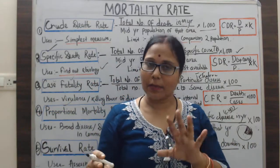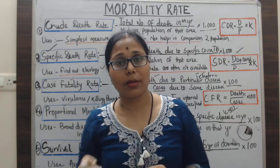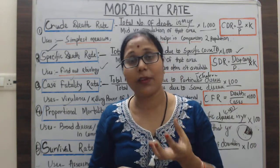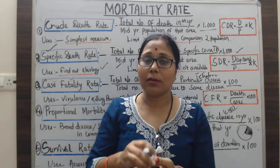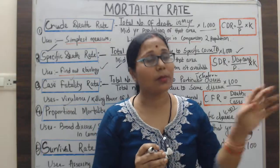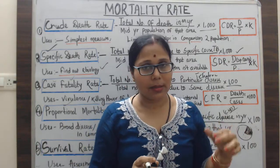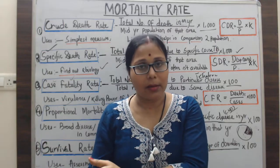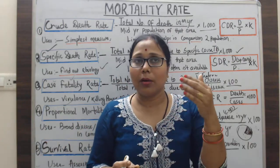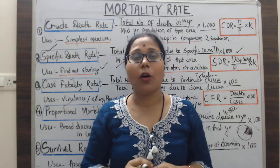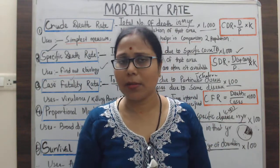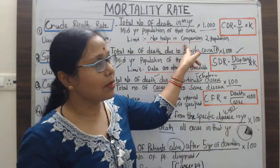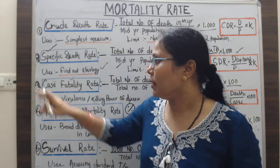One drawback of the crude death rate is that from this rate we cannot find out a clear picture of why people are dying — which disease is causing death, which age groups are affected, how many children died due to malnutrition, or how many died from tuberculosis or measles. This lack of specific information is a key limitation, especially when comparing two communities.